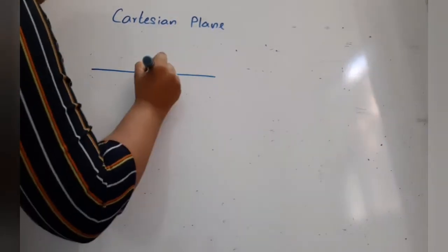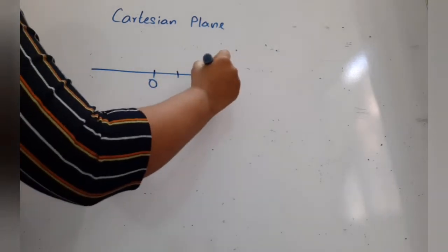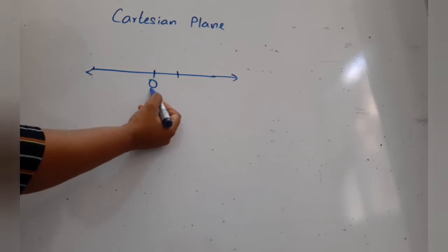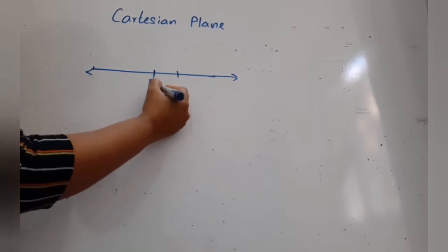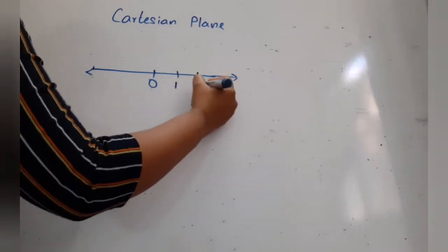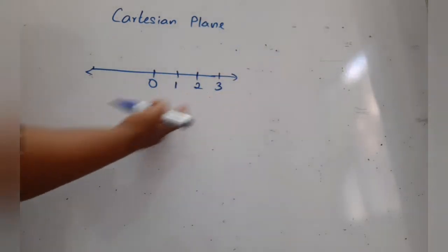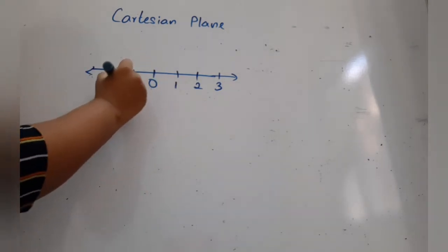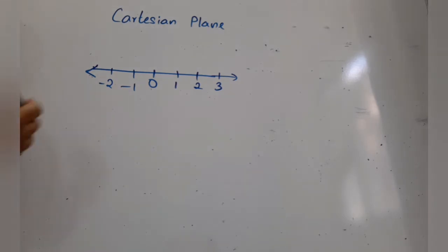Before explaining what a Cartesian plane is, I want to remind you what a number line is — you learned this in grade 6. A number line is a straight line where values are indicated at a fixed gap. If this is zero, then to the right it goes one, two, three, with an arrow mark showing the values are continuing. Behind zero, to the left, negative one, negative two come as well, also with an arrow mark.